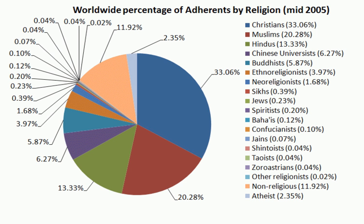The Puranic period and early Medieval period gave rise to new configurations of Hinduism, especially Bhakti and Shaivism, Shaktism, Vaishnavism, Smarta and much smaller groups like the conservative Shratha. The early Islamic period also gave rise to new movements. Sikhism was founded in the 15th century on the teachings of Guru Nanak and the nine successive Sikh Gurus in northern India.